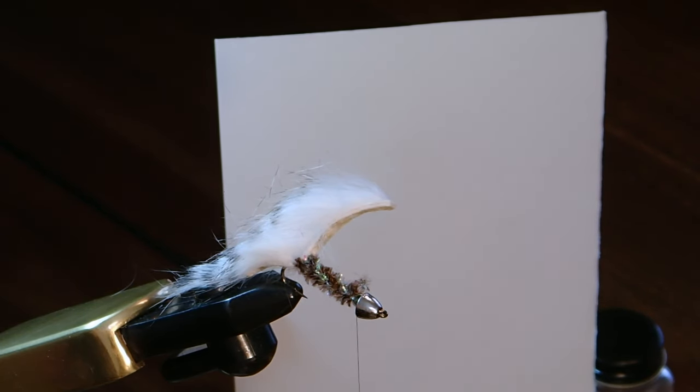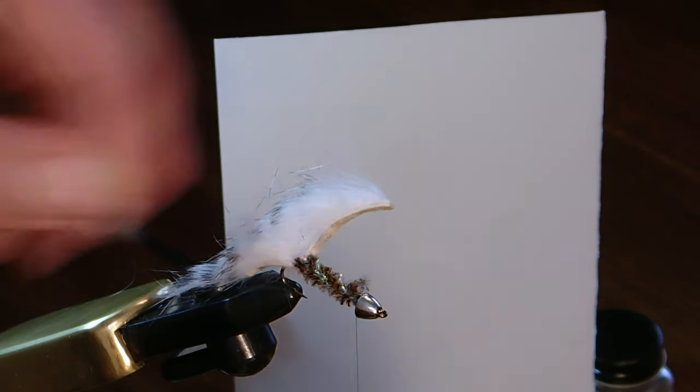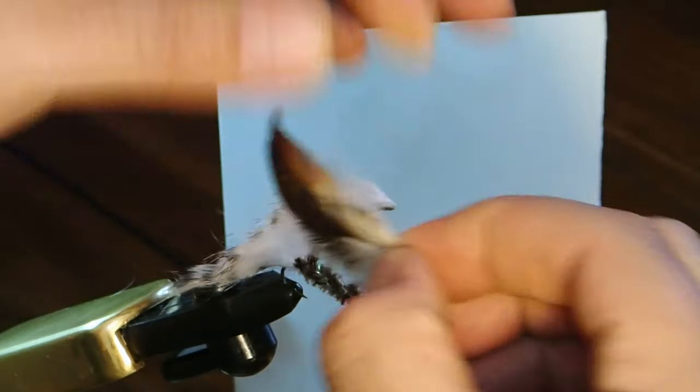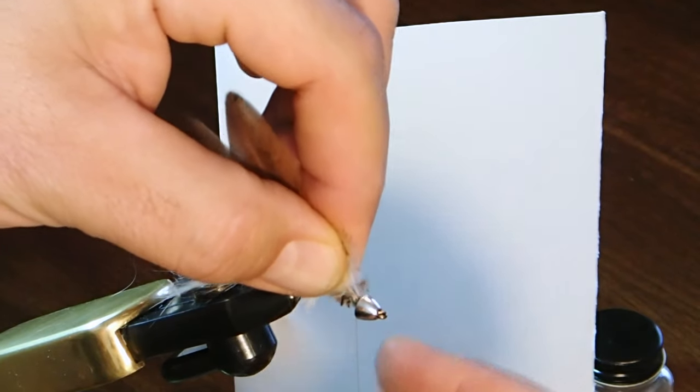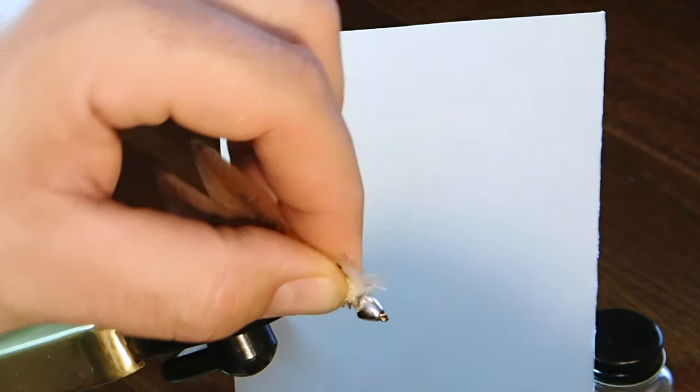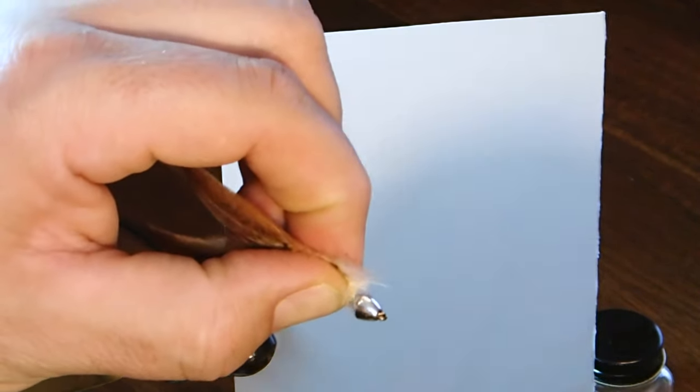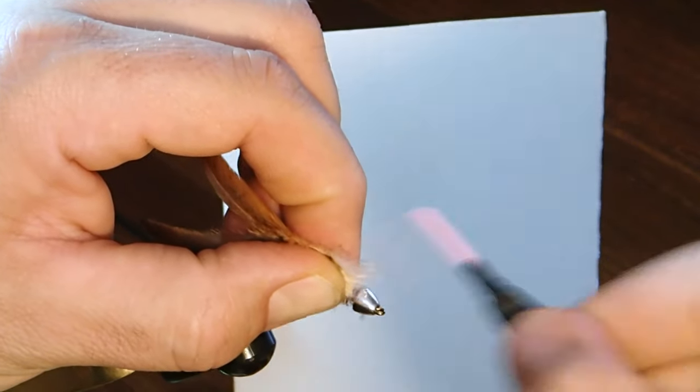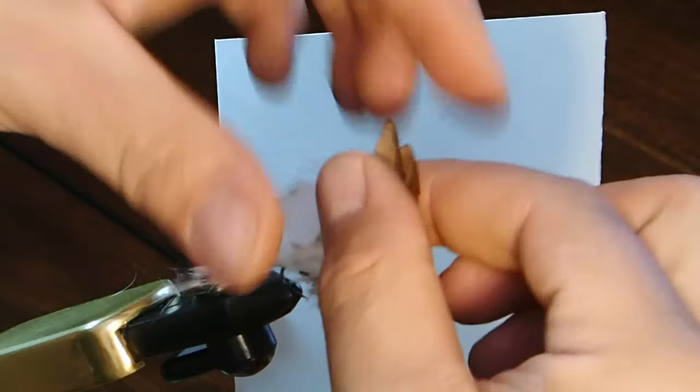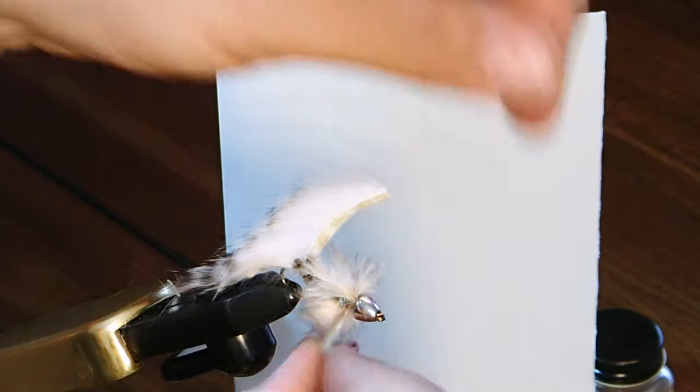Just enough to get that webby hackle, maybe three or four wraps, kind of trim these off so we can tie them in. Okay, now we'll just tie them in. I like to just kind of stick them underneath the bead there and lock them in with thread, a few wraps to secure those down.